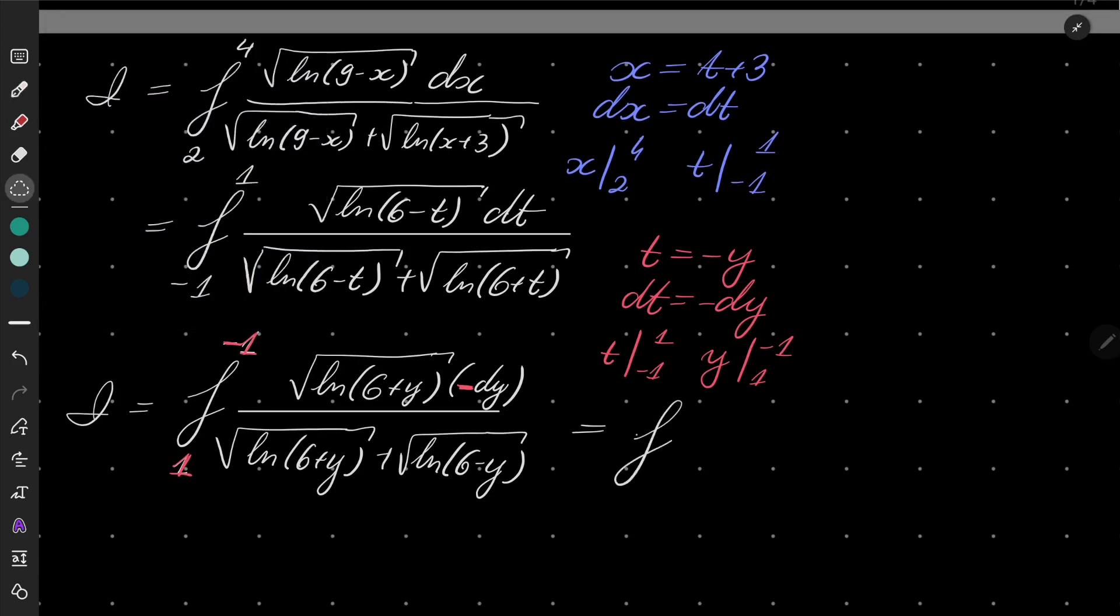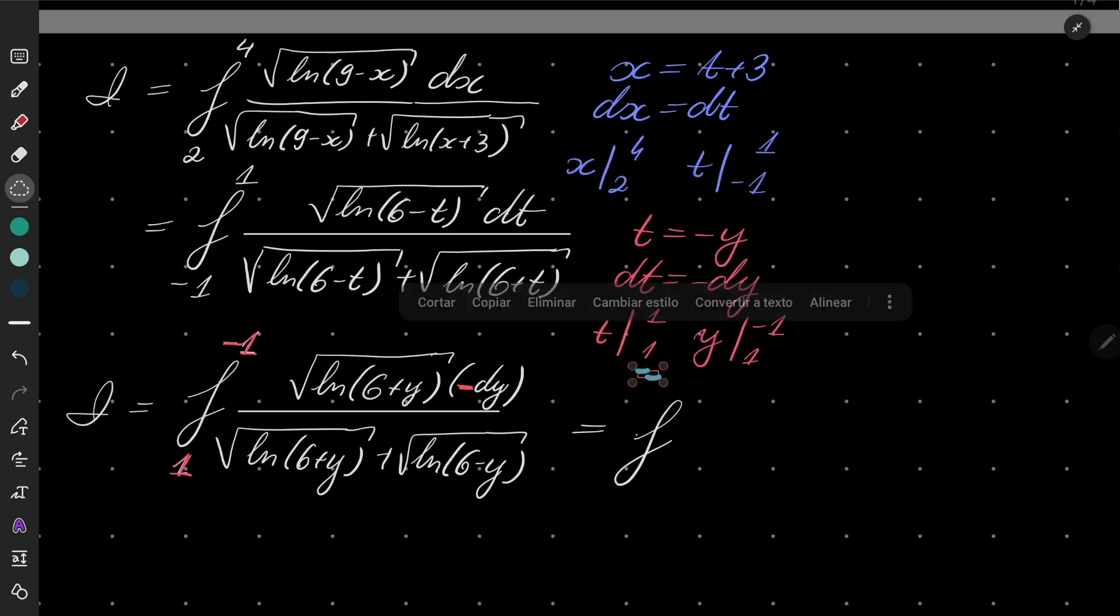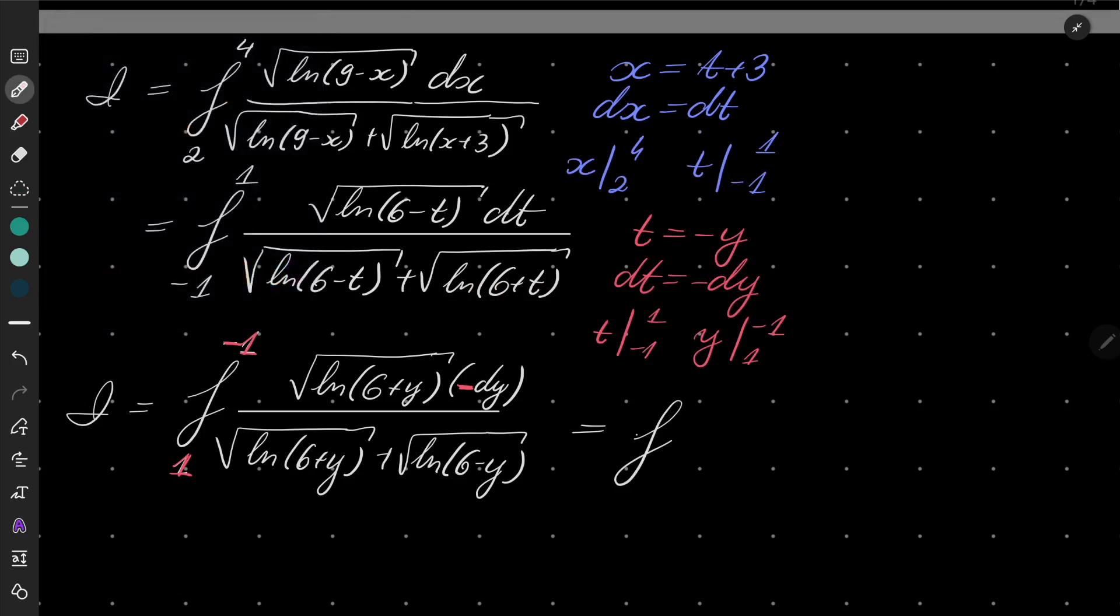After doing that, we will have the following: integral from minus 1 to 1 of square root of natural log of 6 plus t over square root of natural log of 6 plus t plus natural log of 6 minus t, dt.